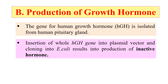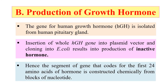What this means is that in humans, the first 26 amino acids are not translated. But when the complete gene is transferred to E. coli, the bacteria are able to translate these extra 26 amino acids as well. And once translated, they are difficult to remove. So the segment of the gene which codes for these first amino acids is constructed artificially from nucleotide blocks.